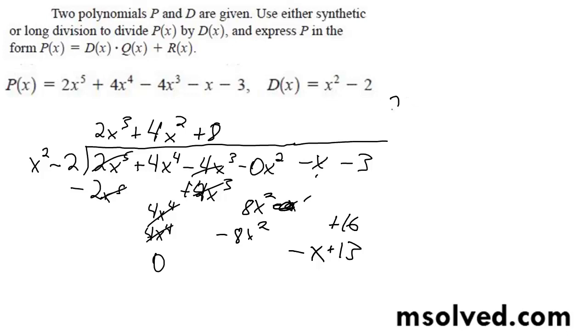So your final solution is going to be 2x cubed plus 4x squared plus 8 plus negative x plus 13 all over x squared minus 2. That's it.